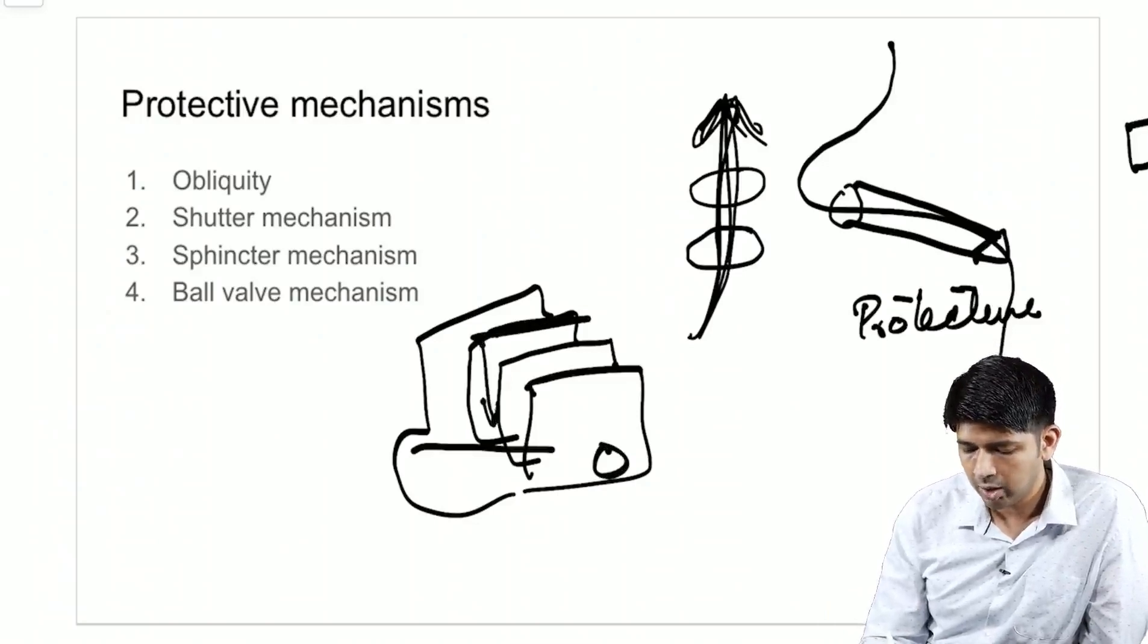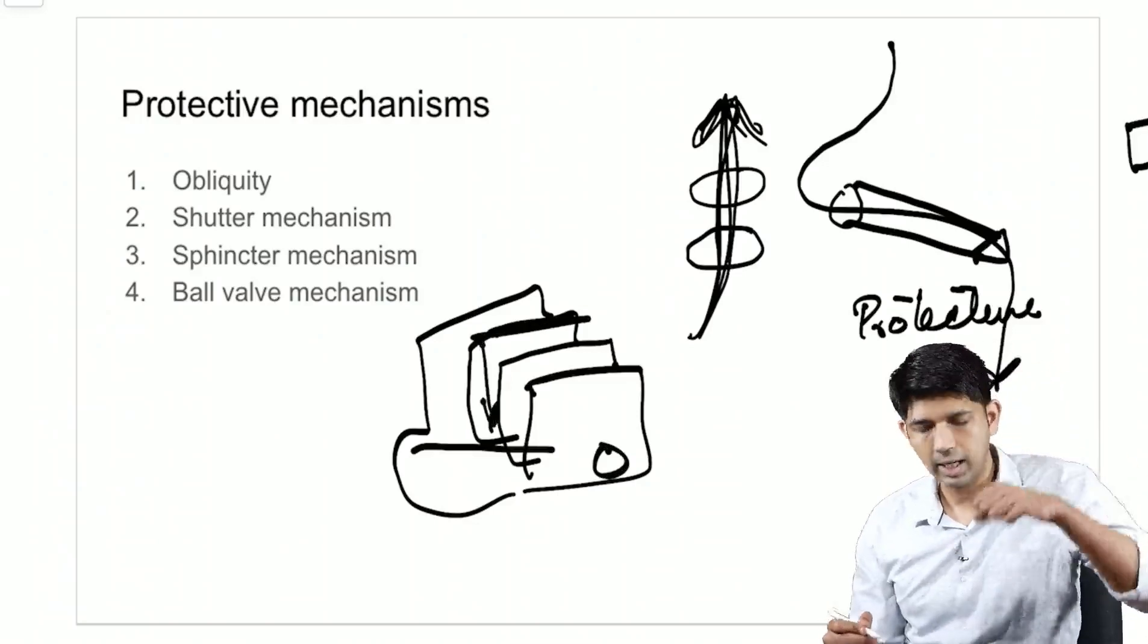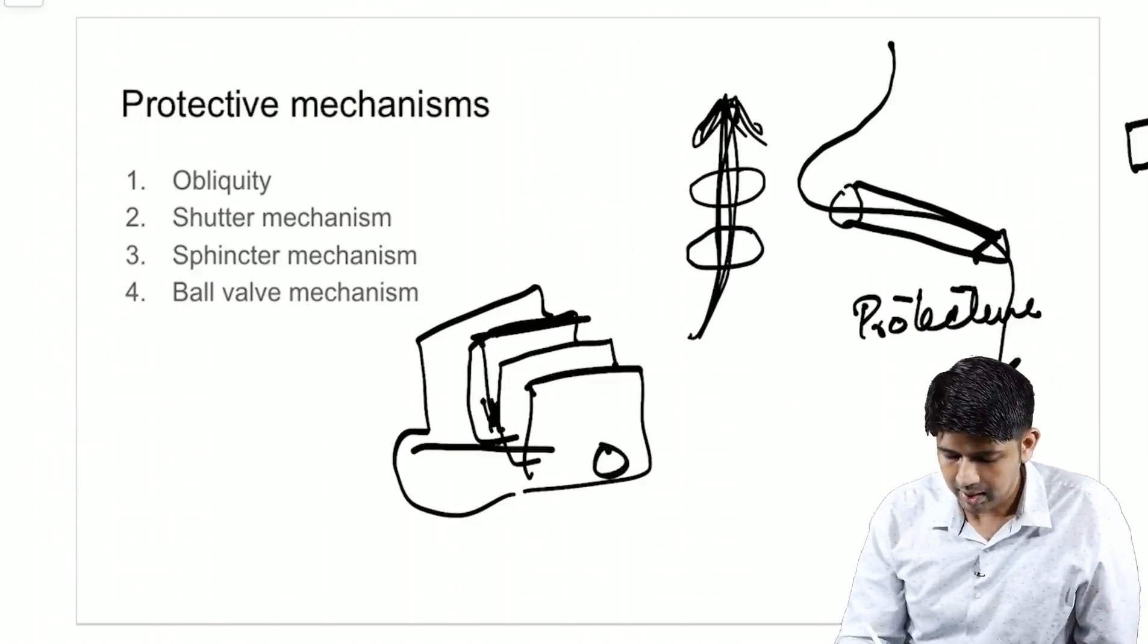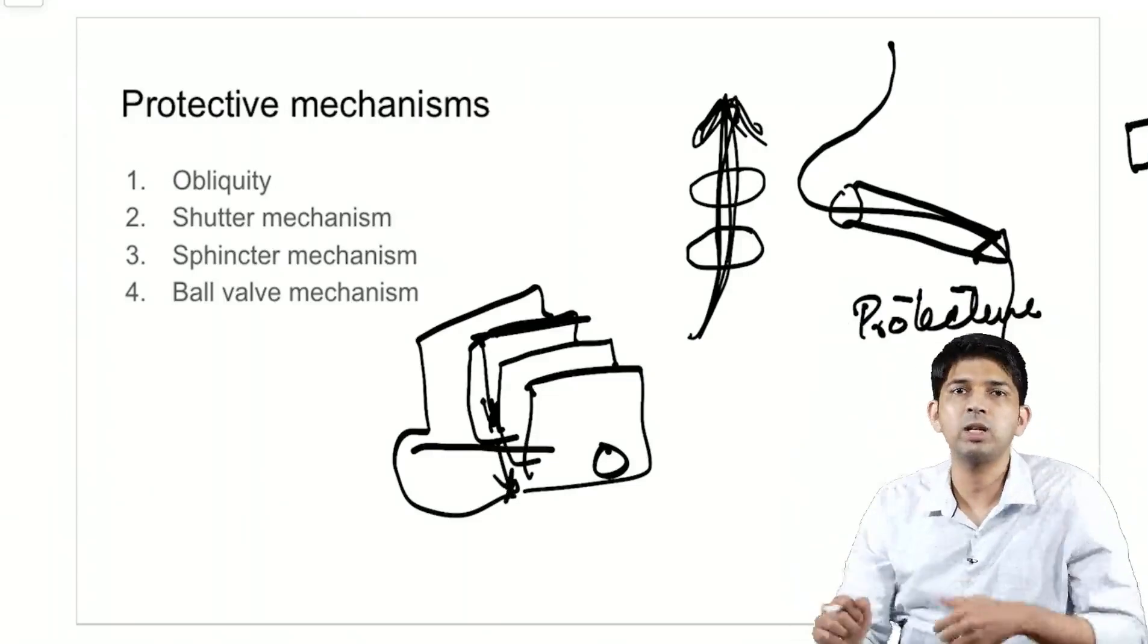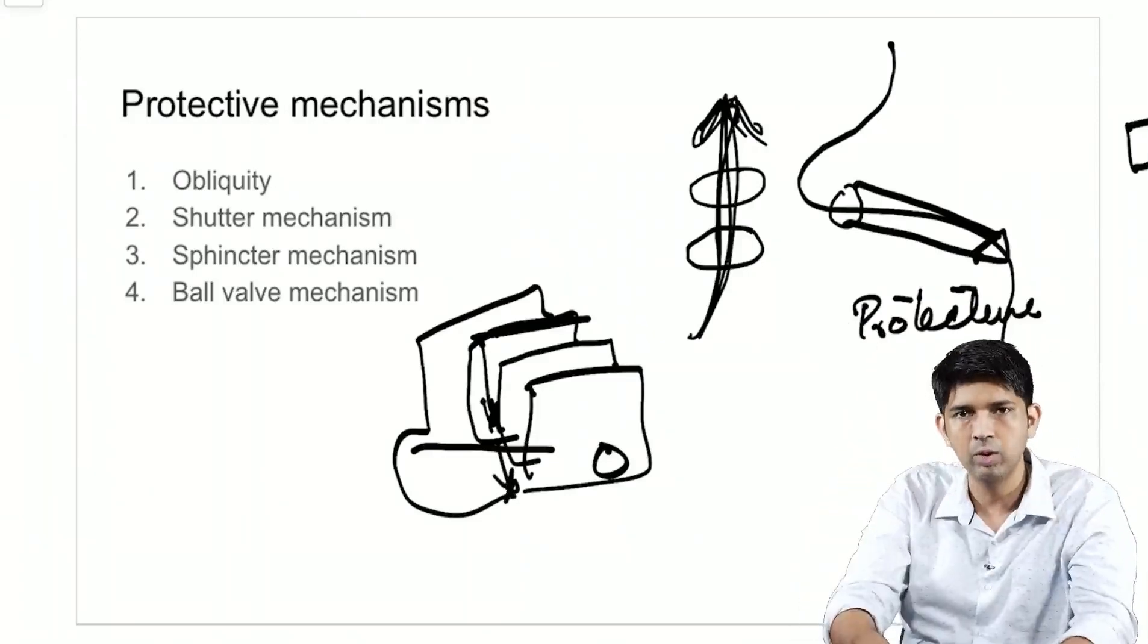Now, when this conjoined tendon contracts, when it contracts, this and the inguinal ligament get opposed to each other. It is like pulling down a shutter for a shop. So when it contracts, it pulls it down.